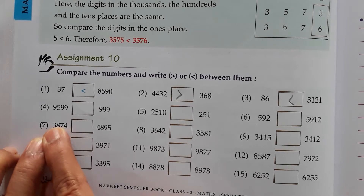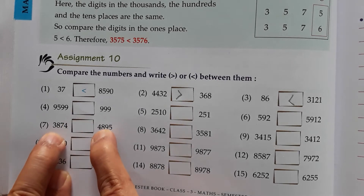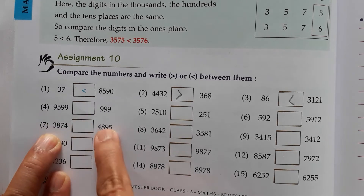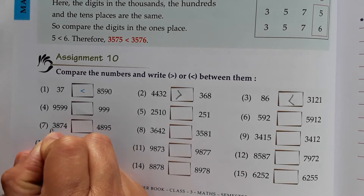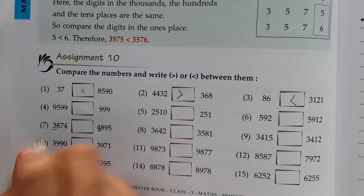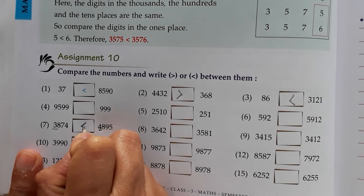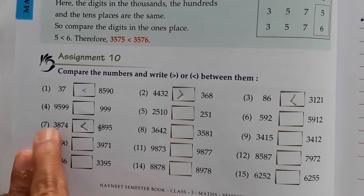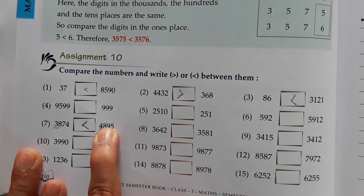Now we will see the 7th sum. This side is a 4 digit number, and this side is also a 4 digit number. So both numbers have 4 digits — what should we do? We should first take the first digit of both numbers and compare them. First digit this side, first digit this side, and compare. 4 is bigger compared to 3, so this number is greater. Because we compare the first digit: 3 here, 4 here — 4 is the greater number.